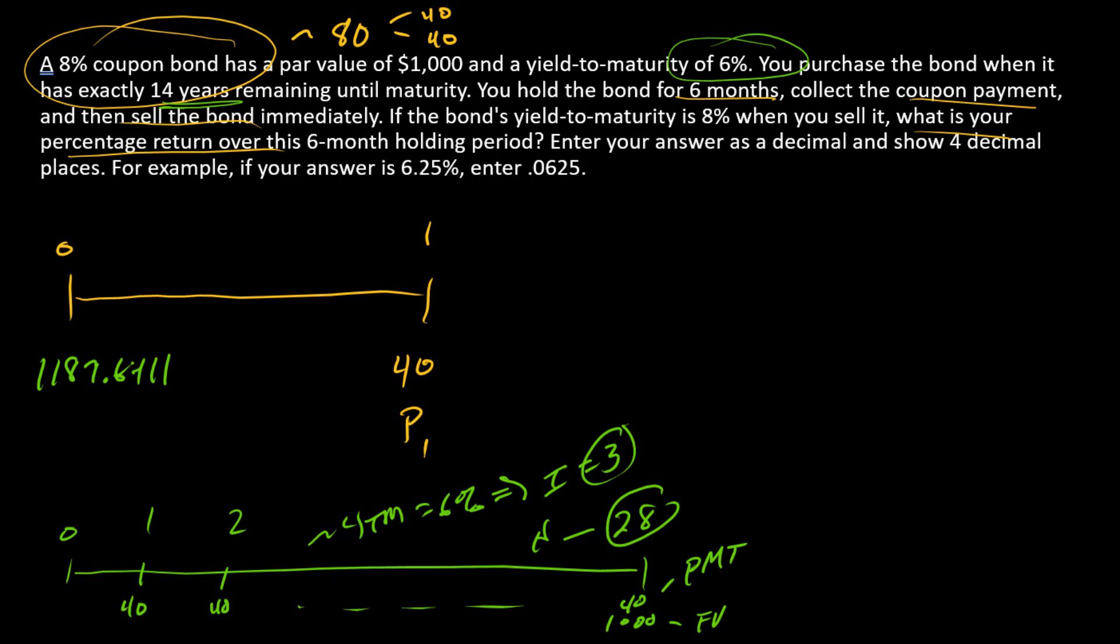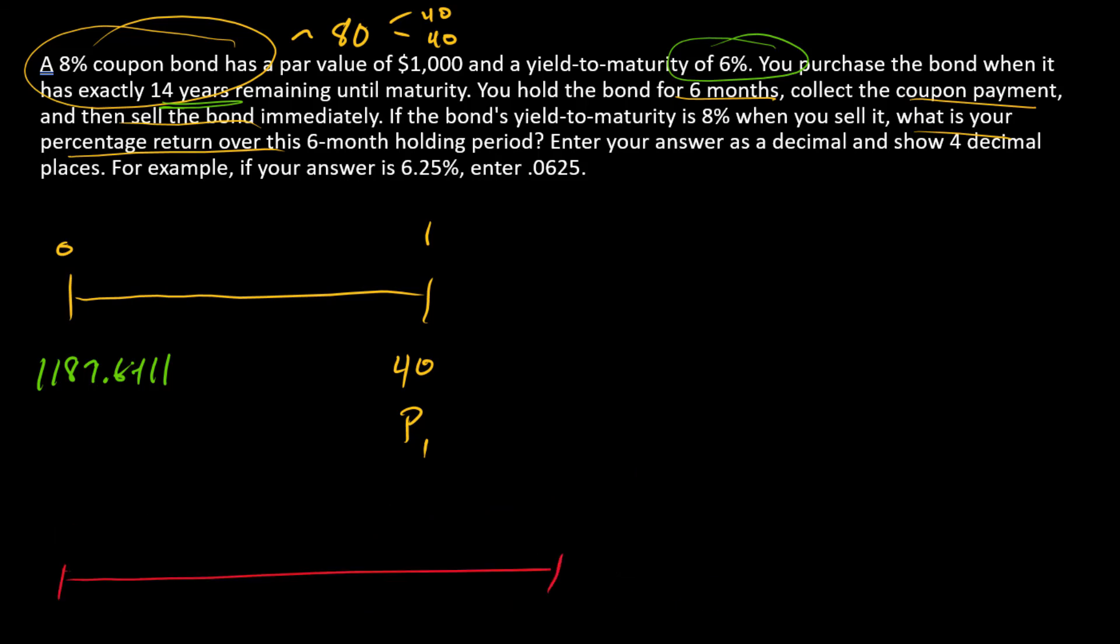Now that I have that, let's go in and calculate P1. This is just one period down the road. So here I have 1, 2, 3, all the way to 28. Once again, we've still got our $40s here. When this bond investor tries to sell the bond one period down the road, this is the timeline that's facing whoever buys or sells the bond. So now there's only 27 payments left. The payments are still $40 and then the par value repayment is still $1,000.